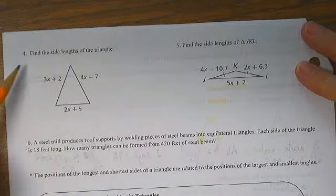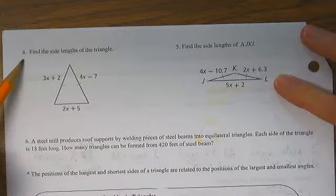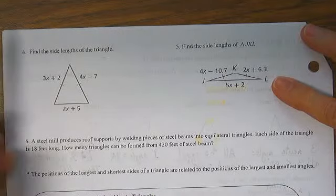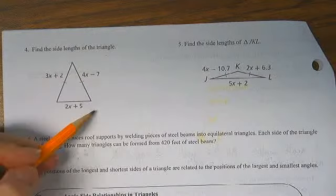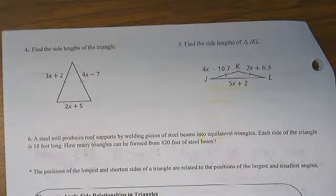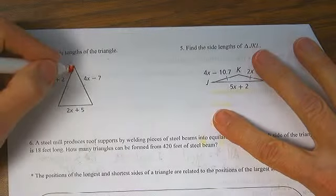Example 4. Find the side lengths of the triangle. They tell us this side is equal to that side. How do we know? They give us the little hash marks.